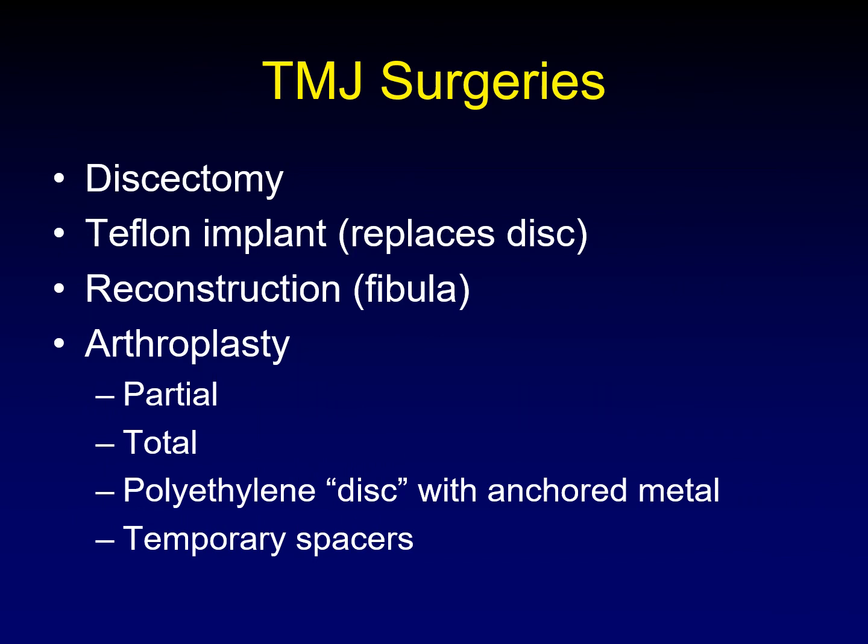We've got one more topic to cover: the appearance of the temporomandibular joint after surgery. There are a variety of surgeries commonly performed, including discectomy where the disc is simply removed, Teflon implant designed to replace the disc, reconstruction of the condylar head using a piece of the fibula, and arthroplasty — which can be partial, replacing just the condylar head, or total, replacing both the glenoid fossa and the condylar head. When you replace the joint, a polyethylene disc is placed between the metallic components as a cushion, anchored usually to the glenoid component.